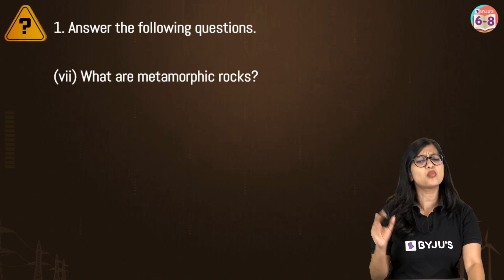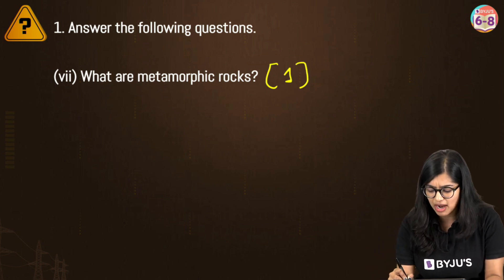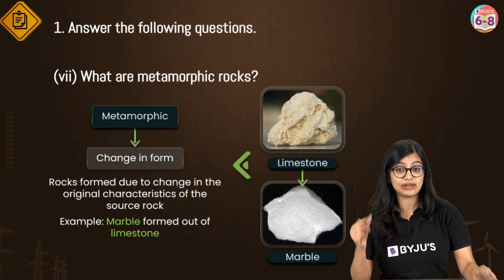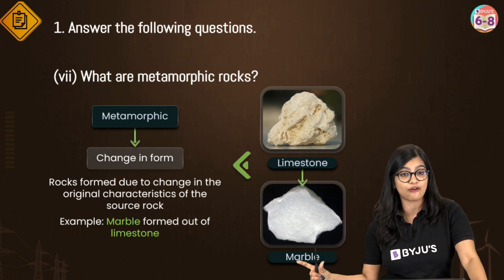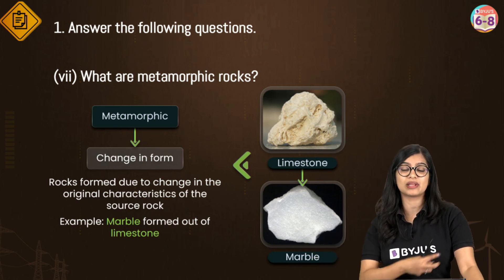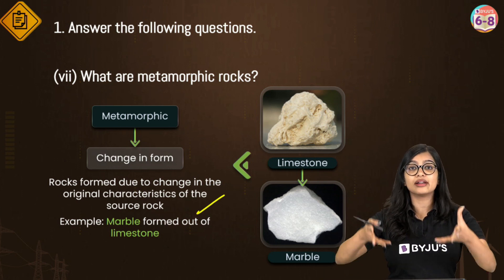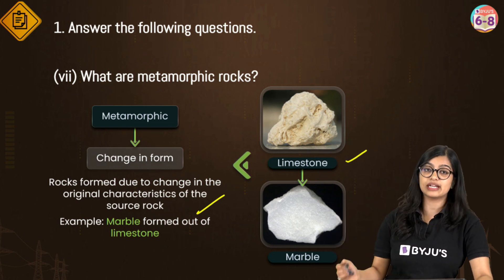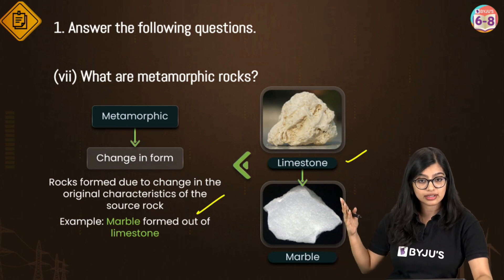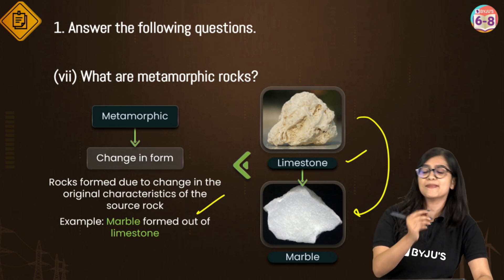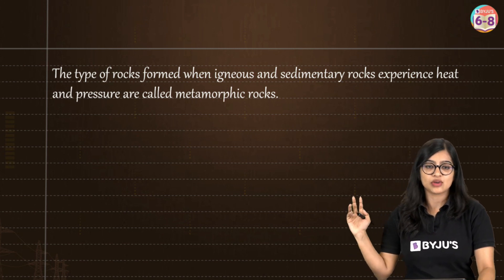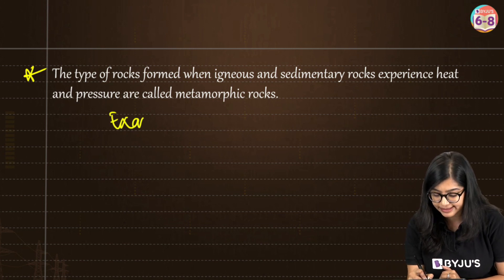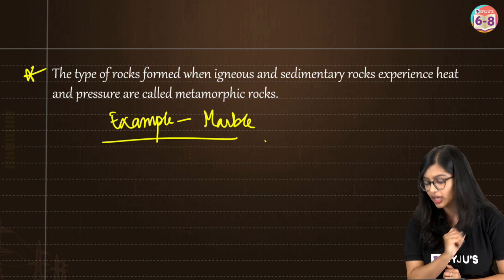The next question is: what are metamorphic rocks? This can come for one or two marks. 'Metamorphic' means change in form. When igneous and sedimentary rocks are subjected to high temperature and pressure, they undergo a change within themselves resulting in the formation of metamorphic rocks. For example, limestone, which is a sedimentary rock, undergoes changes to form marble, which is a metamorphic rock. Write the definition with the example of marble.